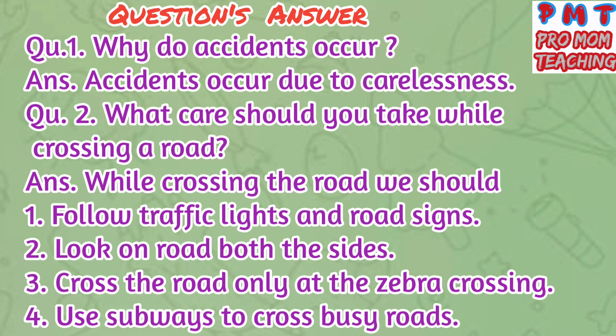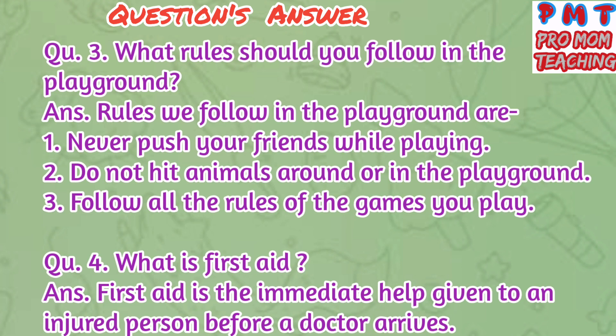Answer the following questions. Question 1: Why do accidents occur? Answer: Accidents occur due to carelessness. Question 2: What care should you take while crossing a road? Answer: While crossing the road, we should first follow traffic lights and road signs. Second, look on both sides of the road. Third, cross the road only at the zebra crossing. Fourth, use subways to cross busy roads.